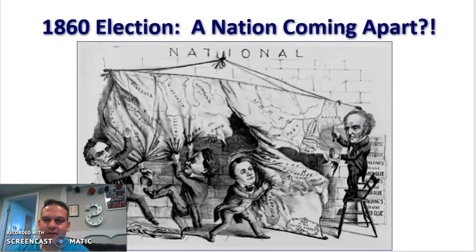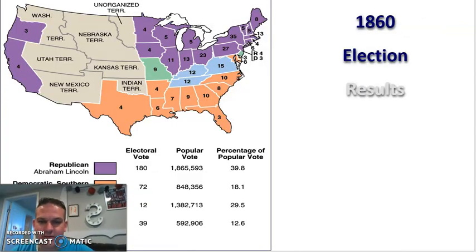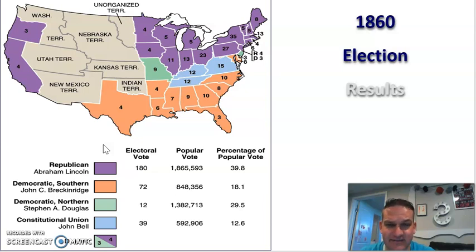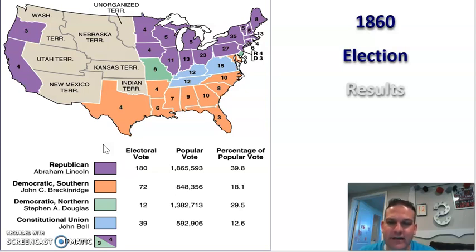Here is another political cartoon talking about the nation being torn apart in all different directions. So the election finally comes. The Republicans pick Abraham Lincoln — this is a surprise vote; nobody thought Lincoln had a chance. But because the Democrats divided up their votes, they caused the Republicans to win. You've got Democrats in the South giving 72 electoral votes to John C. Breckinridge, only 12 to Stephen Douglas, and the Constitutional Union Party divided. Lincoln ends up winning.